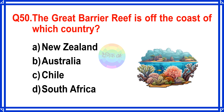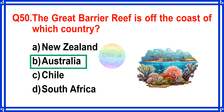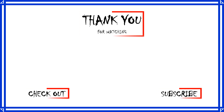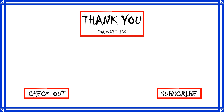The Great Barrier Reef is off the coast of which country? The correct answer is Option B. Australia.